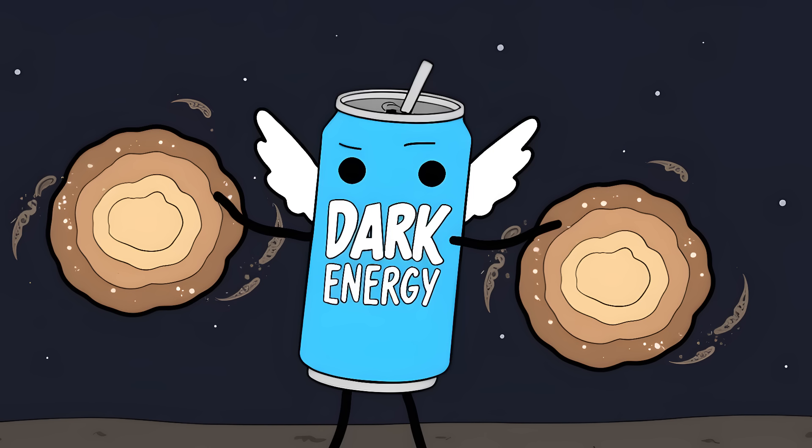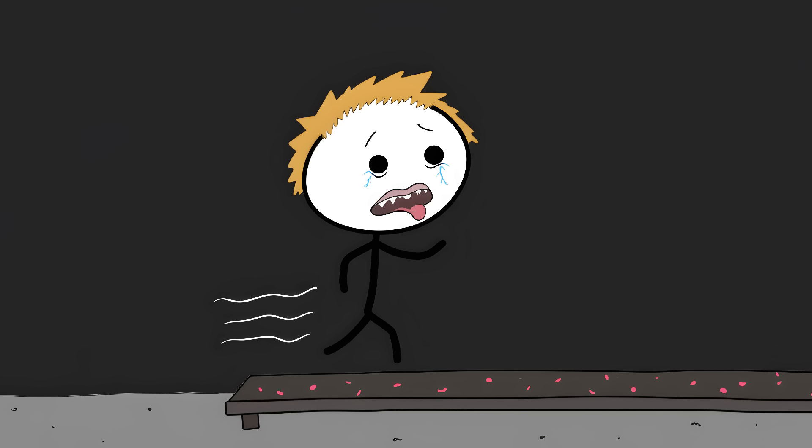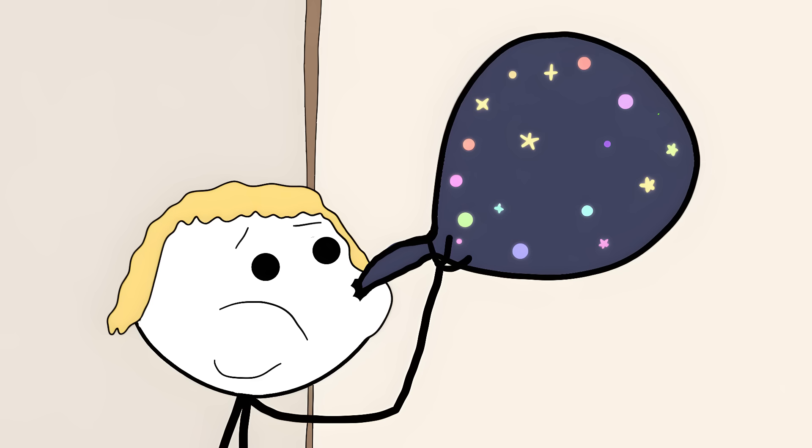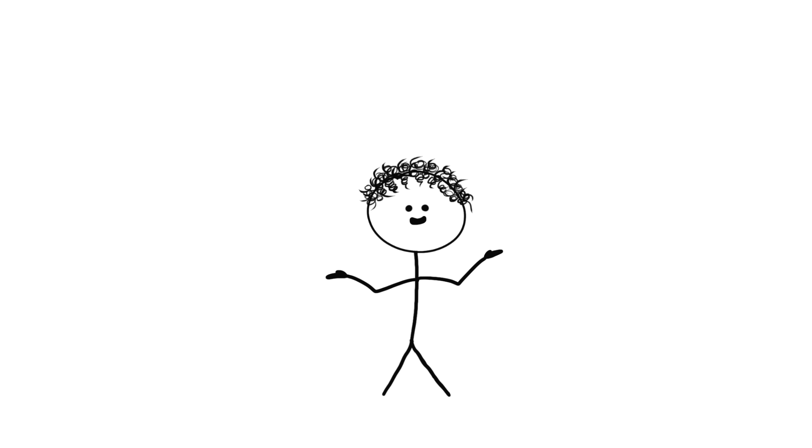Then there's dark energy, and this one's even weirder. It makes up 68% of the universe and acts like a cosmic red bull, making the universe expand faster and faster. Imagine blowing up a balloon with galaxy stickers on it. As you blow, the stickers move apart from each other. That's what dark energy is doing to our universe.